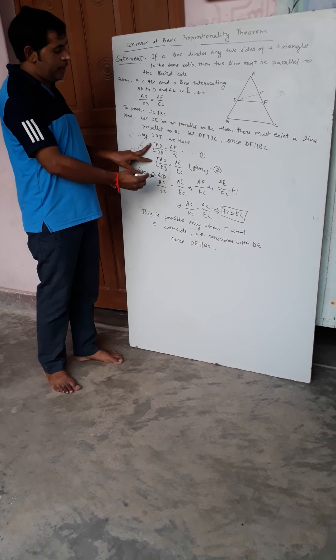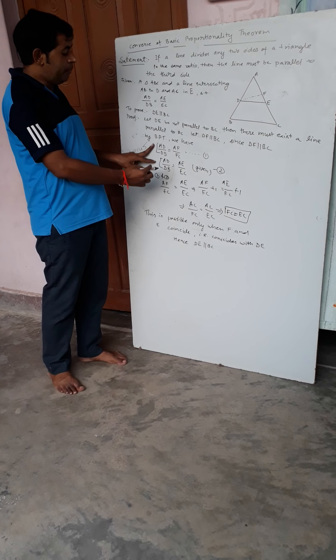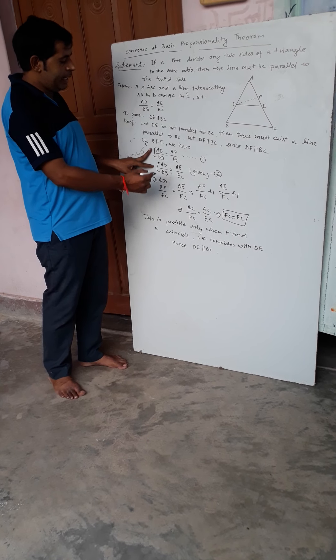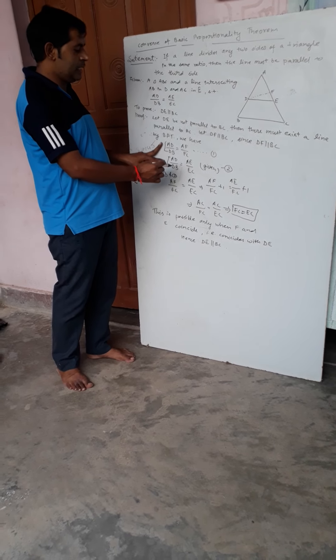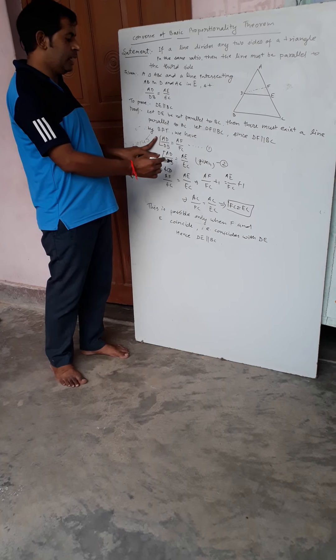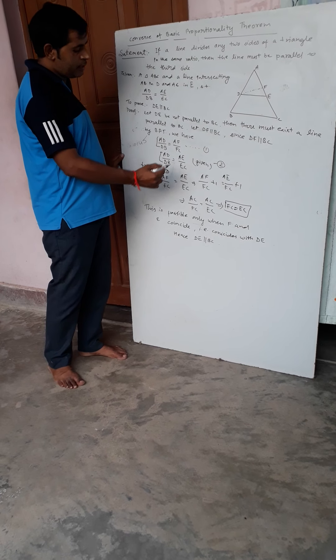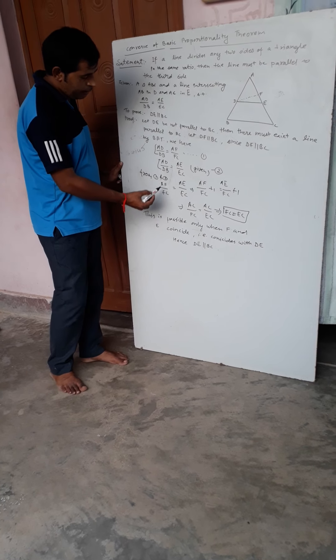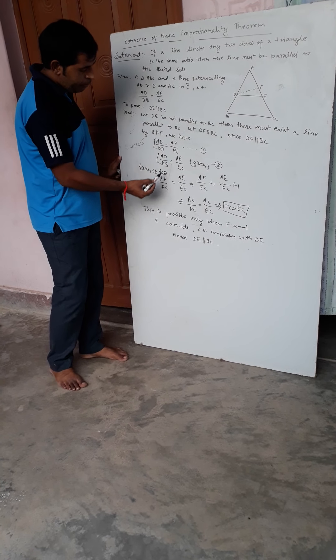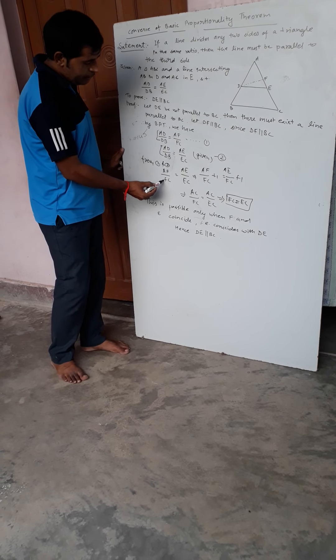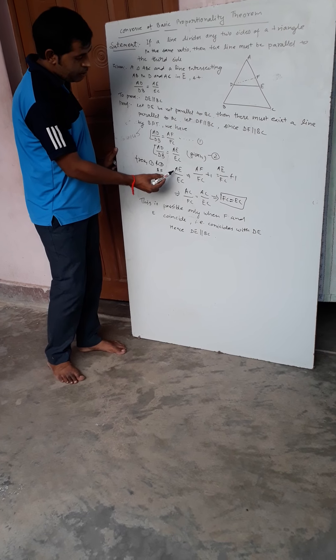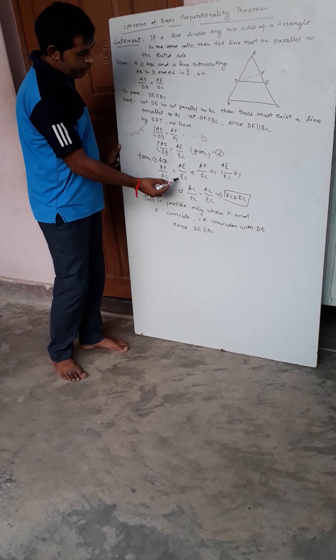From equations 1 and 2, both have AD upon DB on the left-hand side, which is the same. So by equality, since the LHS is the same in both equations, the RHS will also be equal. Therefore, AF upon FC equals AE upon EC.